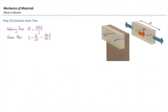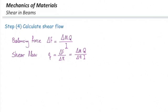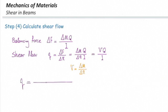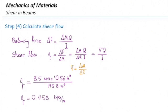Plugging delta F into the equation: q = delta M × Q / (delta x × I). Since delta M over delta x equals shear force V, we simplify to: q = VQ / I. This is how shear flow is calculated. This was introduced in Lecture 18 — I just wanted to remind you how we calculate shear flow.